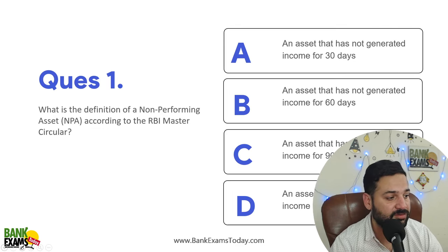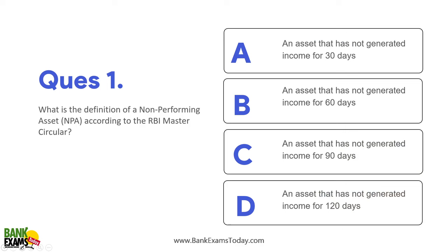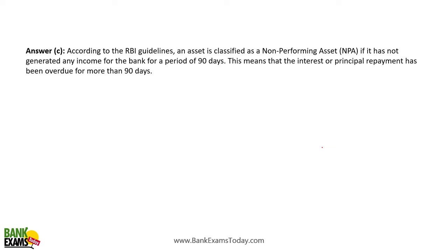Let's start with question number one: What is the definition of NPA according to RBI's master circular on IRAC norms? If an asset has not generated any income for 90 days, it becomes an NPA.